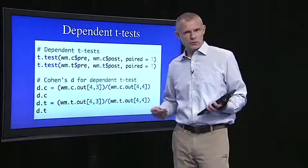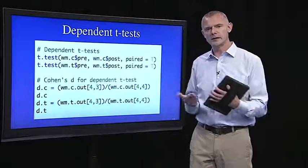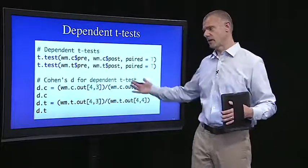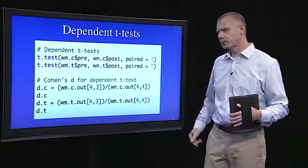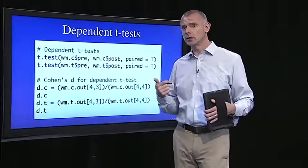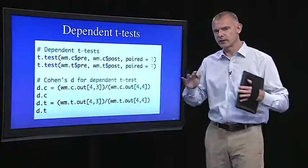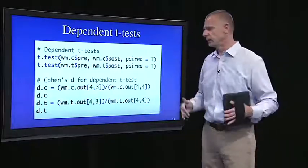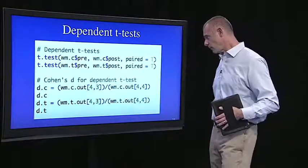Remember, whenever we do this sort of null hypothesis significance test, we should just always have an estimate of effect size right there with it. So I did that here. Here's the Cohen's D. What's Cohen's D for a dependent t-test? This is in a live class. I would pause and wait for somebody to give me an answer.